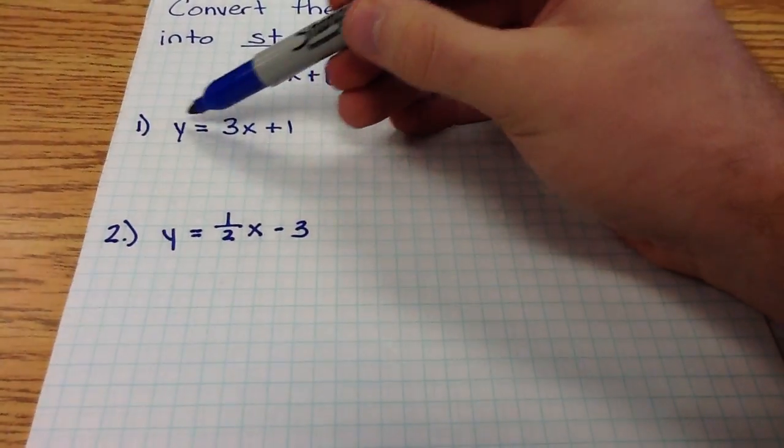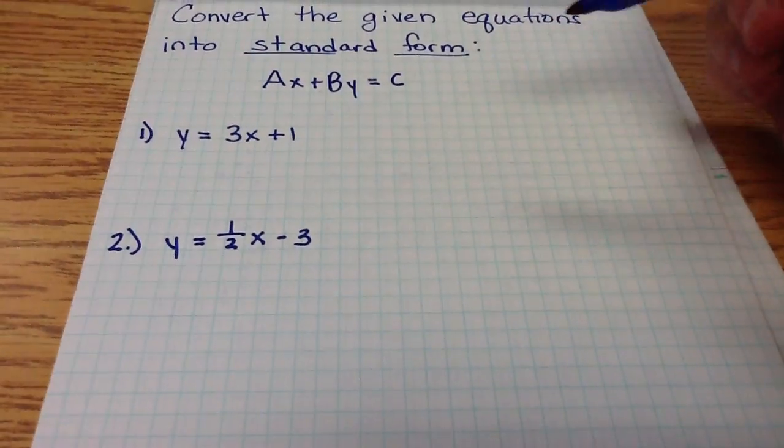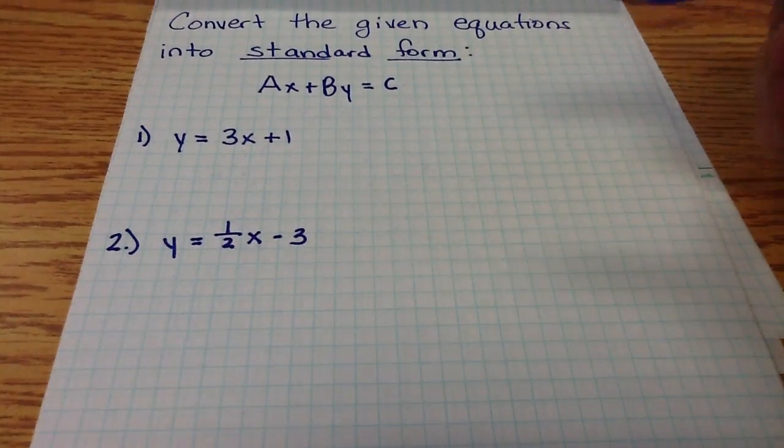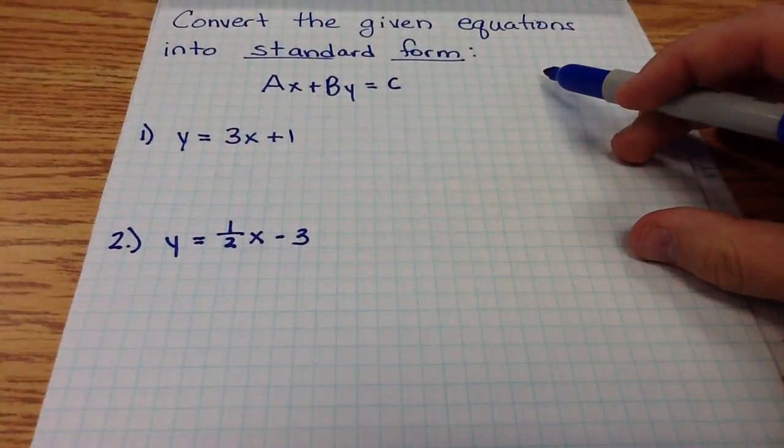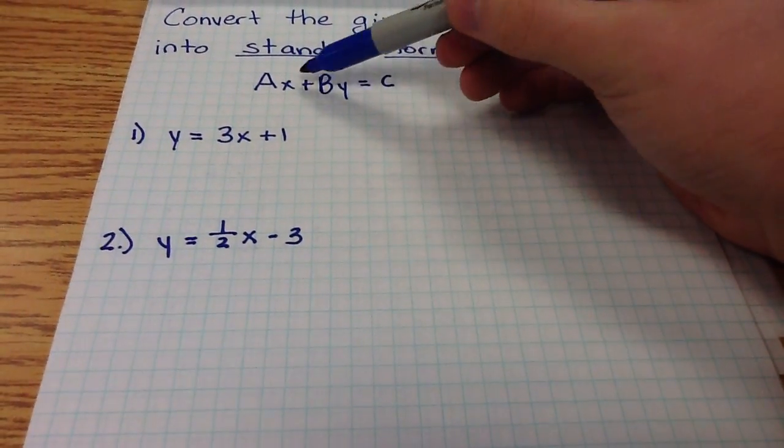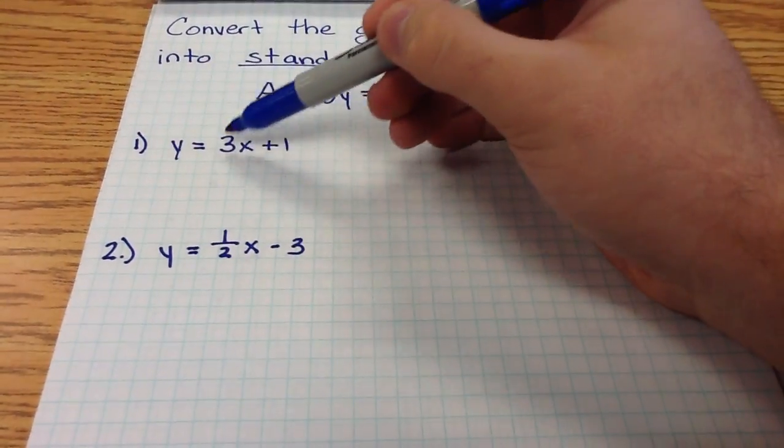Looking at all three of these coefficients or numbers, they are all integers, so there's nothing special needed to be done with this problem other than getting x and y on the same side of the equal sign. Similar here, x and y are on the same side of the equal sign.